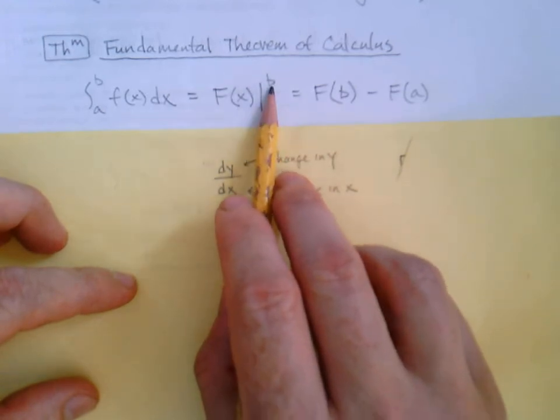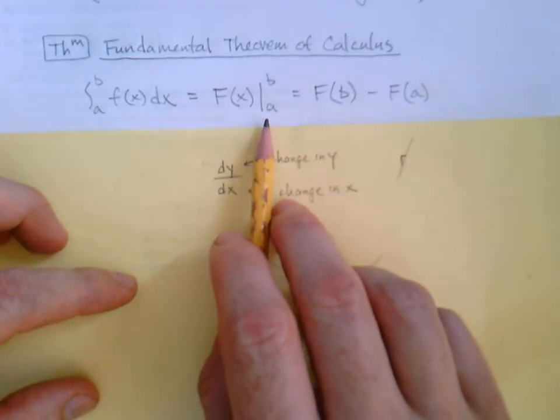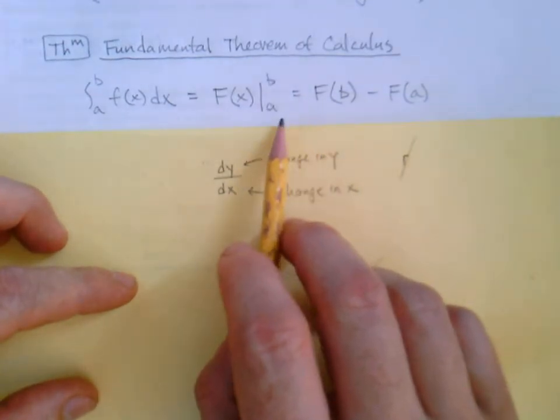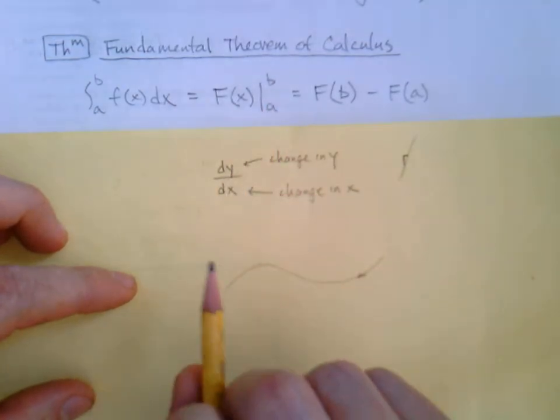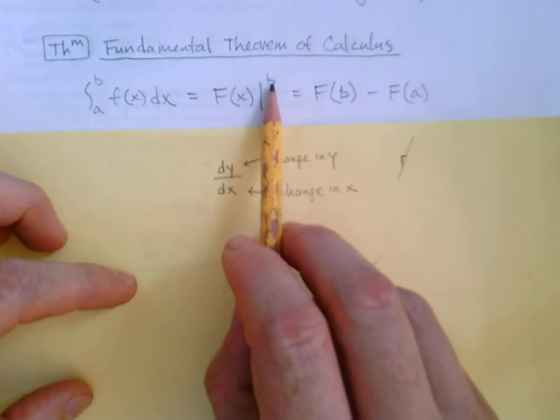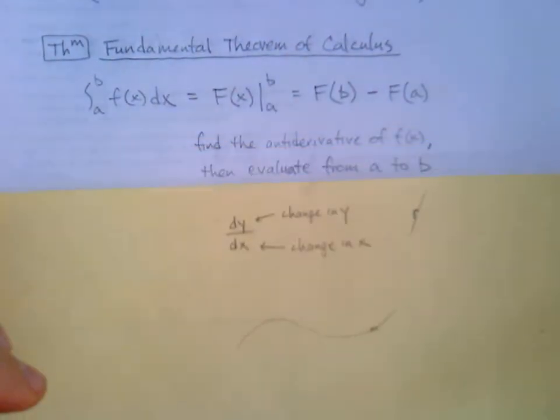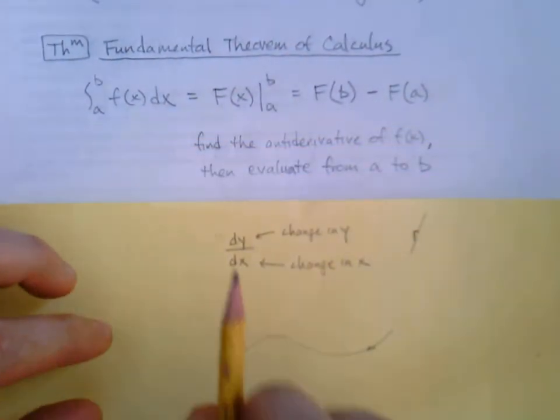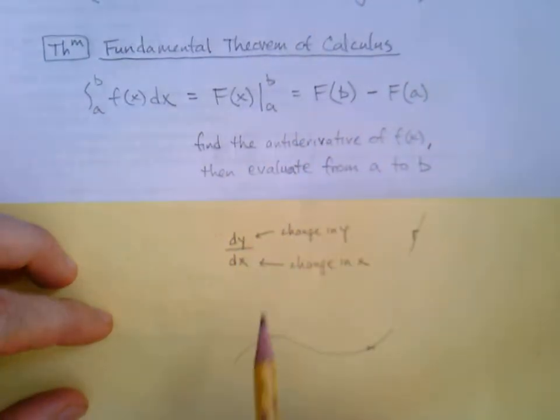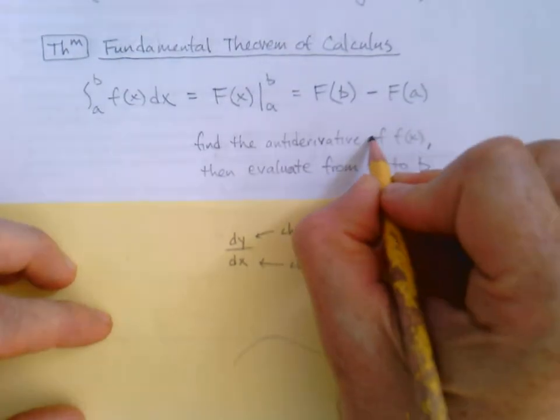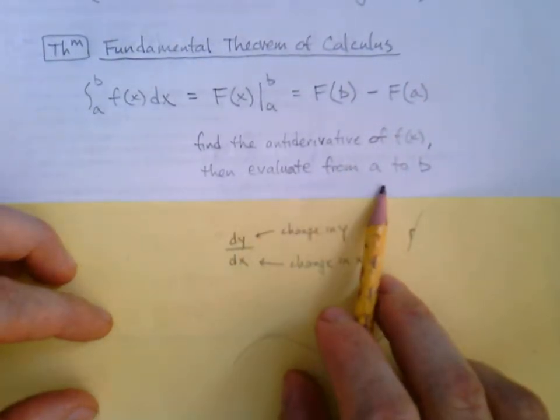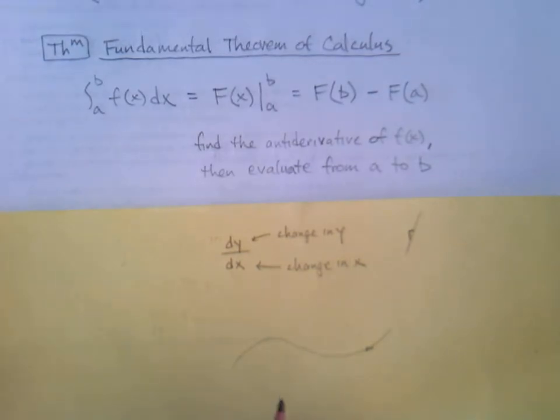When I take the anti-derivative, I get capital F(x). So where do the a and the b come in? I'm gonna draw this vertical line and put the a at the bottom and the b on top. What that does is it means in the next step I'm gonna evaluate from a to b. How do I evaluate from a to b? You see it right here: I plug the b in first, I subtract, and then I plug the a in to the anti-derivative. So in words, better than spoken: find the anti-derivative of f(x), then evaluate from a to b. Let's see this in action.